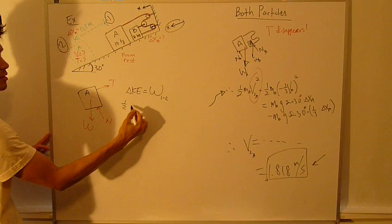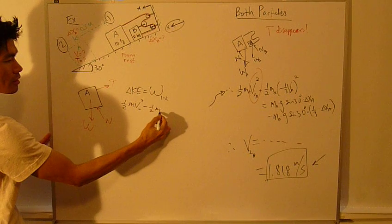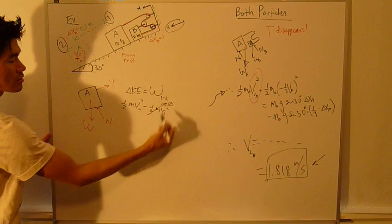So delta KE, one-half mv-squared, minus one-half mv-1-squared, initially at rest, equals zero.